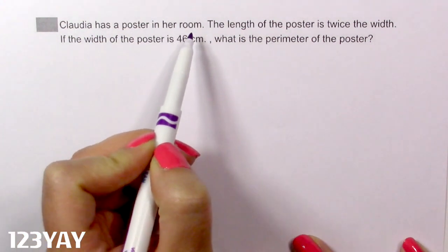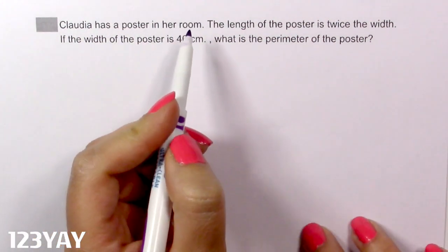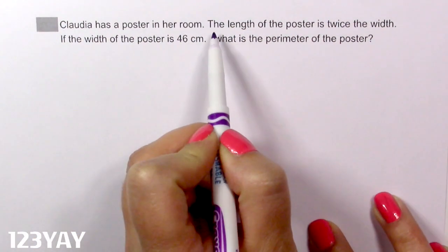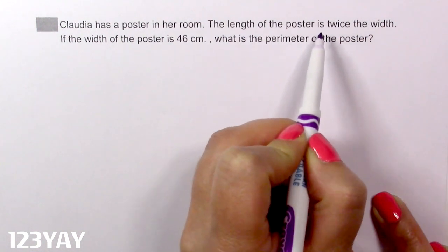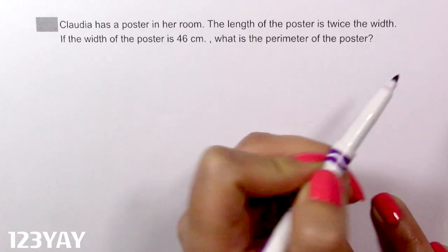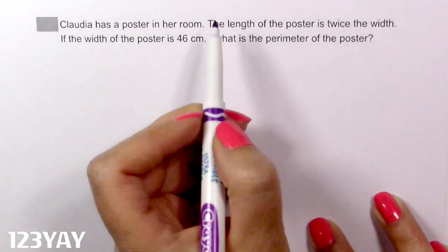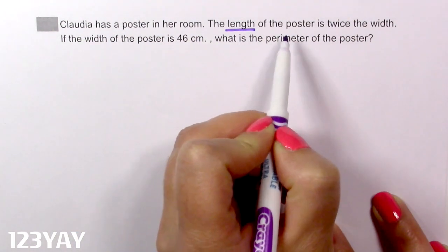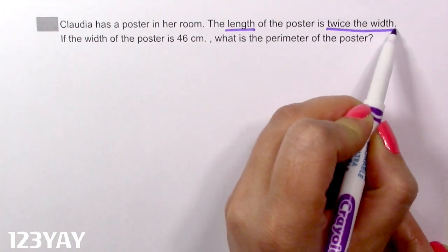Claudia has a poster in her room. I don't see keywords here. Next sentence. The length of the poster is twice the width. What do you think is a keyword? The length is twice the width.